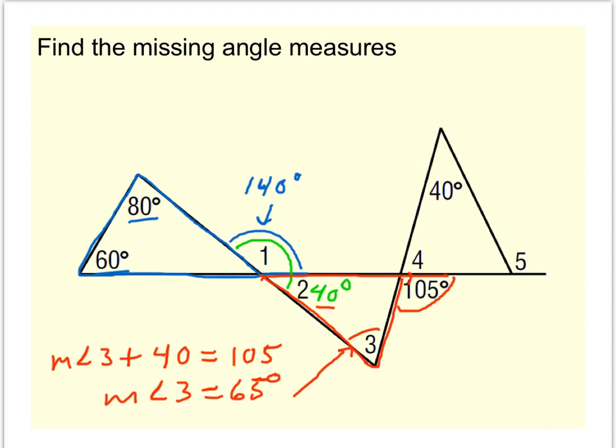Now let's find angle 4 next. I see 4 and 105 degrees form another linear pair, so that means angle 4 must be 75 degrees. So I've got 75 is angle 4, and 40 degrees. In this last triangle, angle 5 is another exterior angle, and the exterior angle is the sum of the two remote interiors. So 40 and 75 together, angle 5 should be 115 degrees.